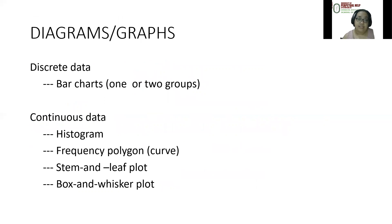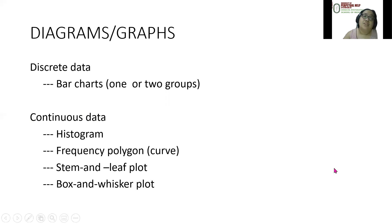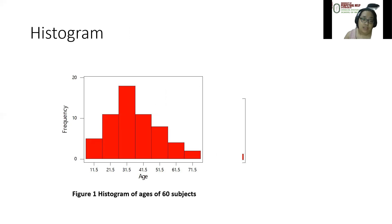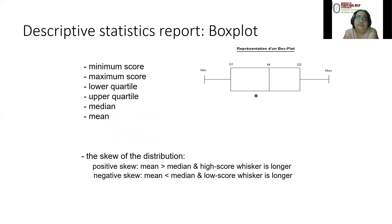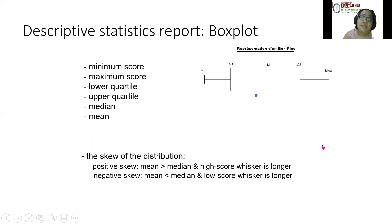Other ways to use biostatistics include making diagrams or graphs. For discrete data we use bar charts. Continuous data would use a histogram, frequency polygon, stem and leaf plot, or box and whisker plot. With this data, we could present it with a histogram, a polygon, or a box plot. The box plot shows minimum score and maximum score with the lower and upper quartile, median, and mean, and also gives you the skew of the distribution. Positive skew means the mean is greater than the median and the high score whisker is longer. Negative skew means the mean is less than the median and the low score whisker is longer.